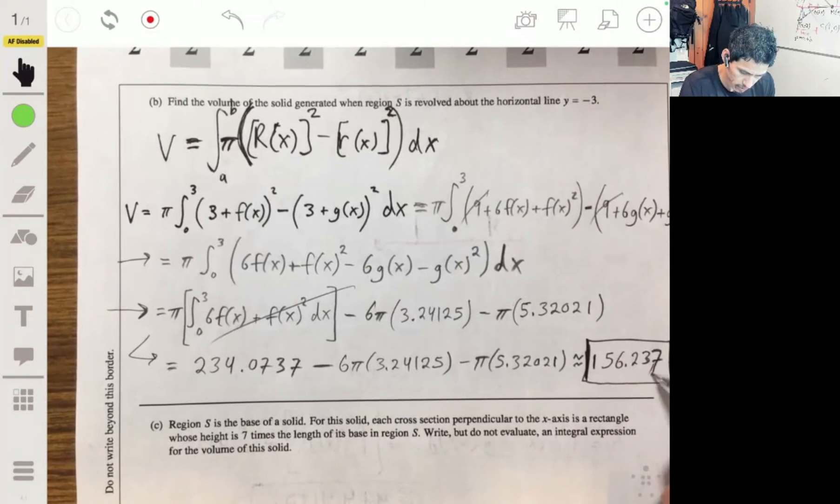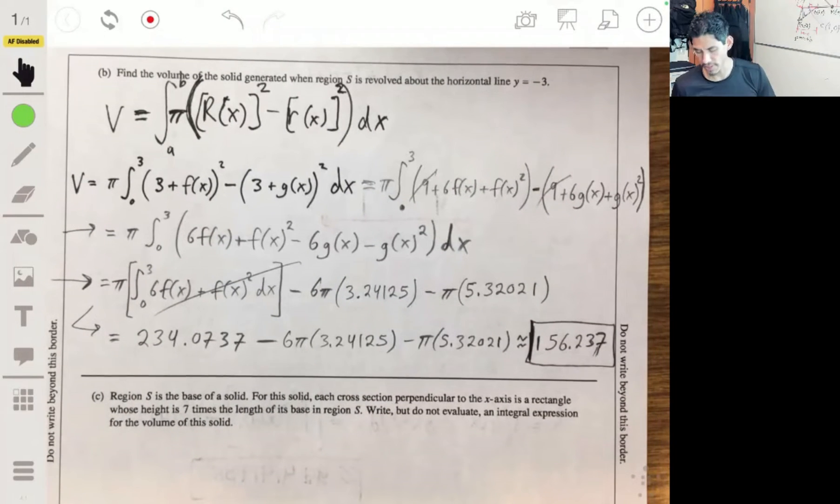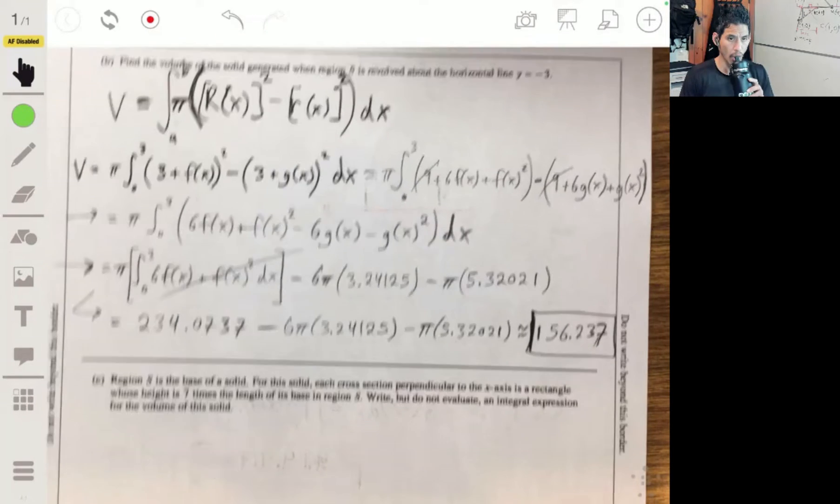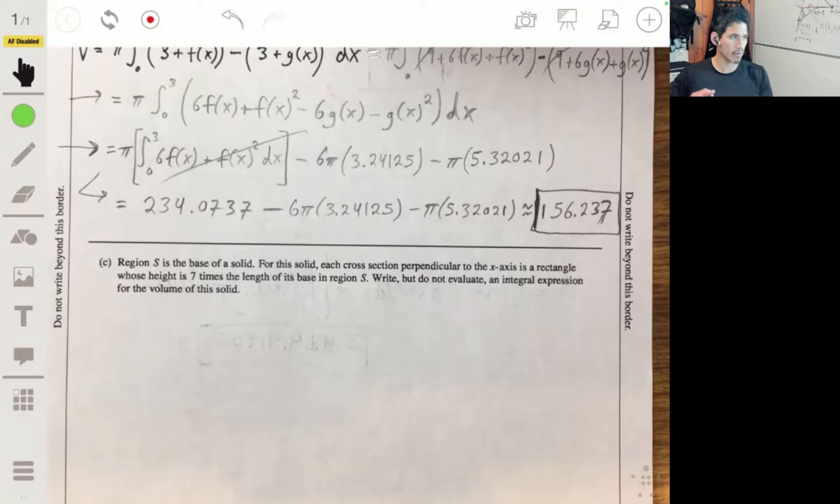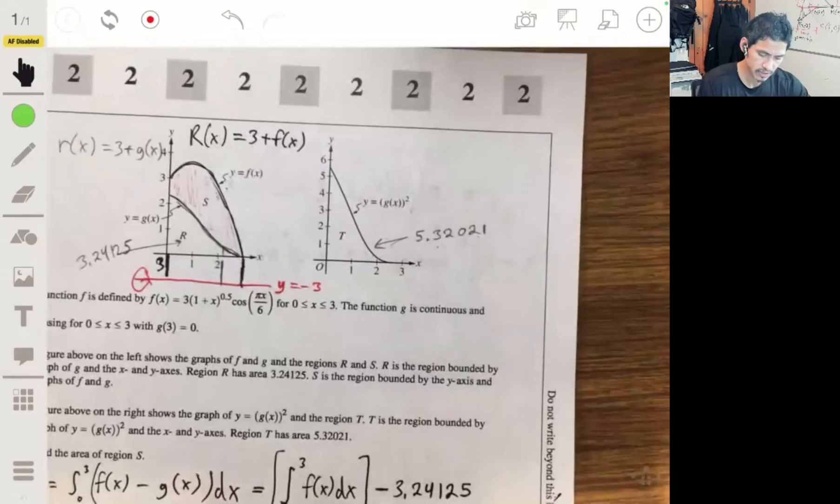I actually like these problems as long as you don't make a small mistake. I wish that you weren't so crunched for time, but they're pretty fun I think. Alright, the last one, part C: Region S is the base of a solid. For this solid, each cross section perpendicular to the x-axis is a rectangle whose height is seven times the length of its base in region S. Write, but do not evaluate, an integral expression for the volume of this solid.